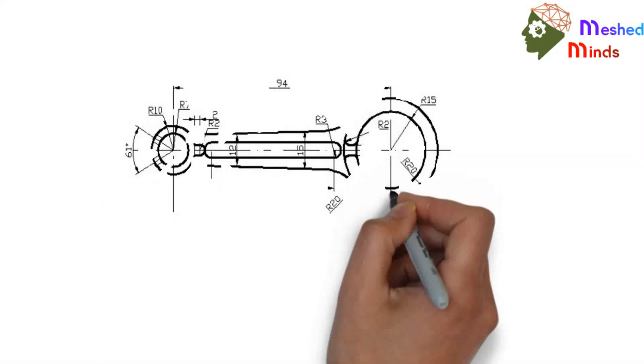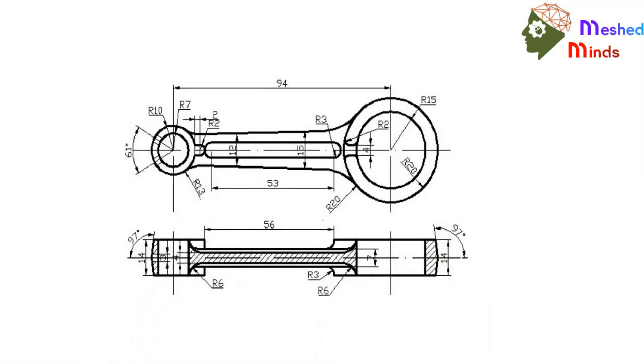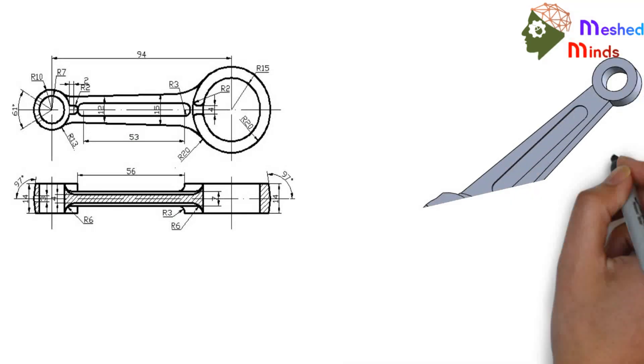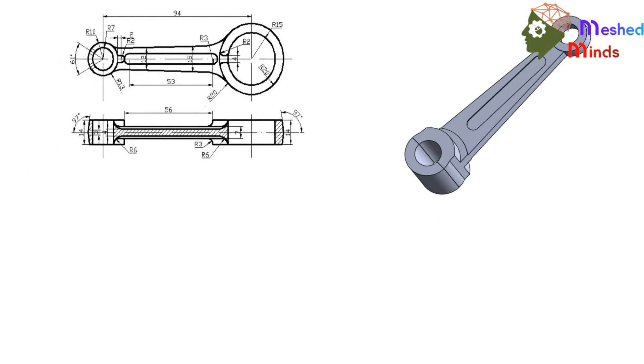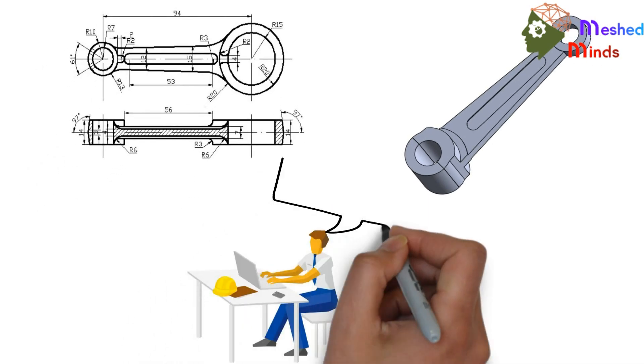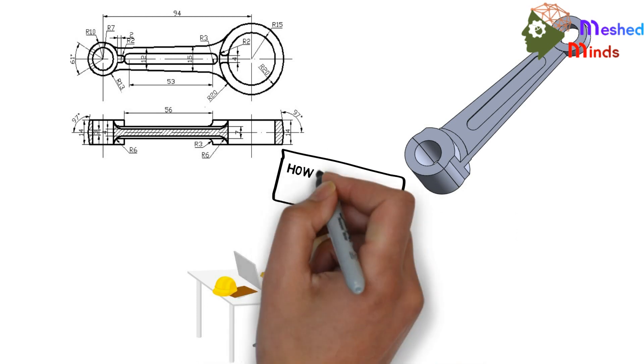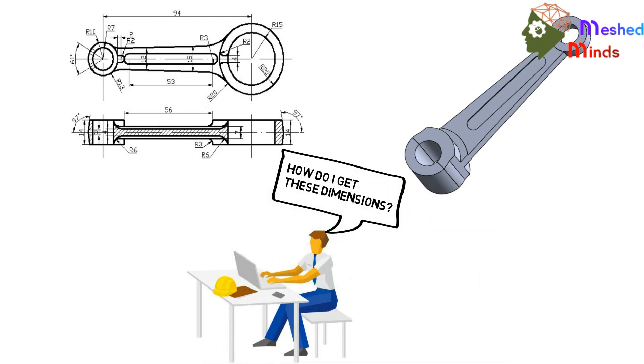In conventional CAD training courses, you would have probably learnt how to model a component once you have the dimensions of it in front of you. But if you want to get into R&D, you should not only have modeling skills, but you should also have strong engineering fundamentals where you would be able to show how these dimensions come.